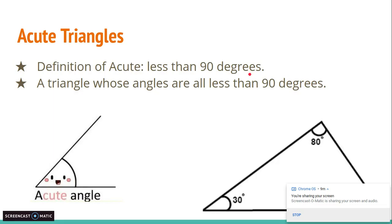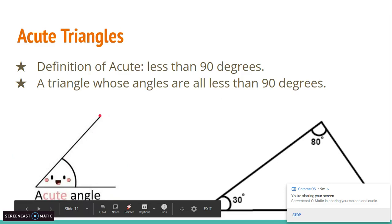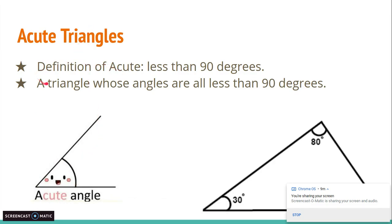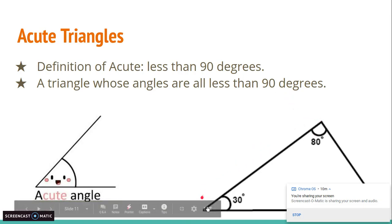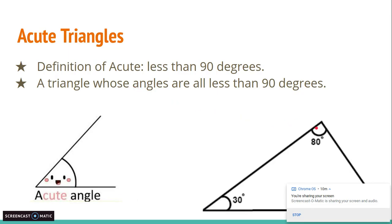Acute triangles is our next type. The definition of an acute angle is anything less than 90 degrees. In this picture, this angle is less than 90 degrees — because if it were 90 degrees, it would go straight up and have a little square. An acute triangle is a triangle whose angles are all less than 90 degrees. For example, 80 degrees is less than 90, 30 degrees is less than 90, and 70 degrees is less than 90 — so since all three angles are acute, this is an acute triangle.